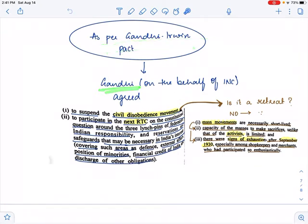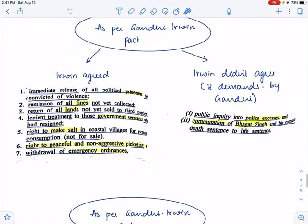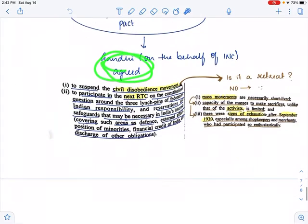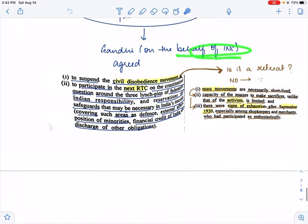And what did Gandhi agree now? Here we saw what Irwin agreed and what he did not agree. And now under this pact, what did Gandhi agree? What did he say? What was Gandhi okay with? Gandhi agrees on the behalf of INC that Gandhi would suspend the civil disobedience movement.